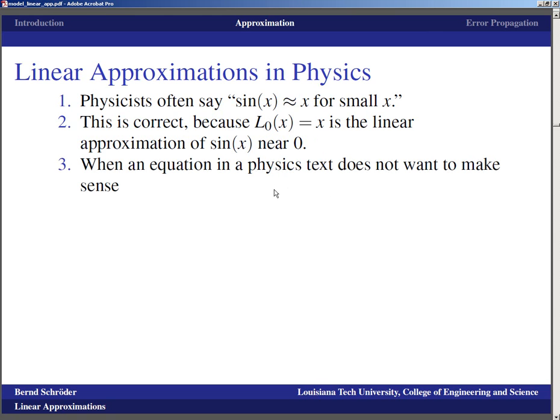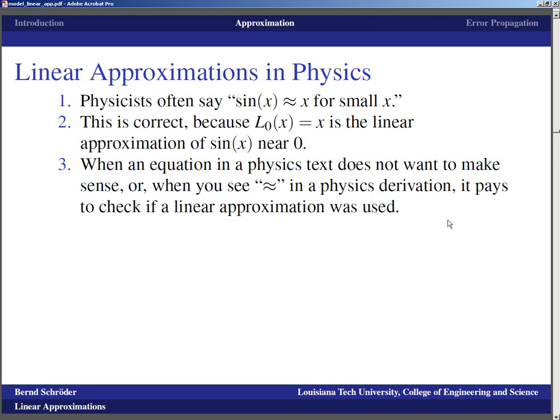When an equation in the physics does not want to make sense or when you see approximation signs in the physics derivation, it really pays to check if somebody used a linear approximation. If you are similar in your approach towards these things as I am, I always wanted things to be exact. That is something that feels a little bit strange. It takes some getting used to. The physicists want it to be exact too, but if the computation can only be led to a good conclusion with a certain approximation and if that approximation is reasonable, then that approximation is just being used.